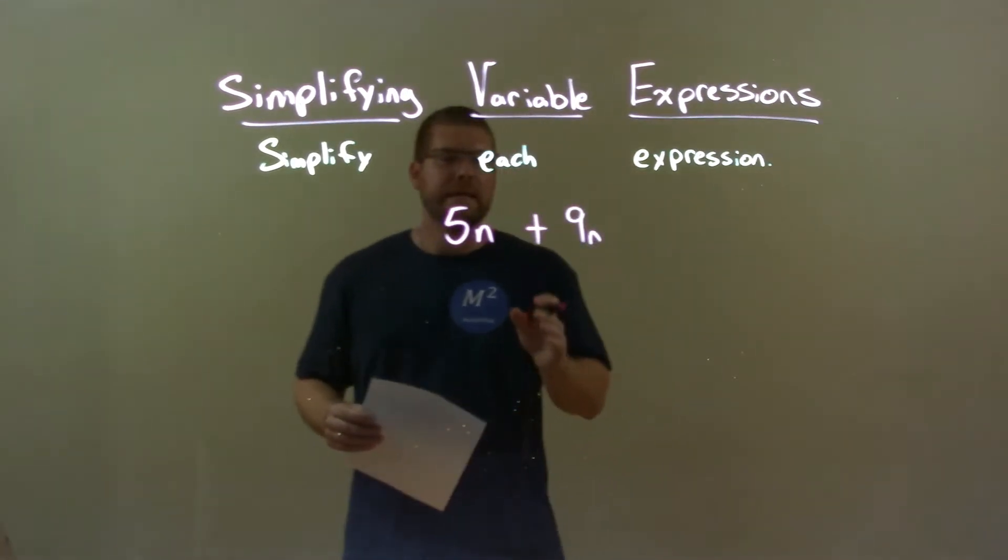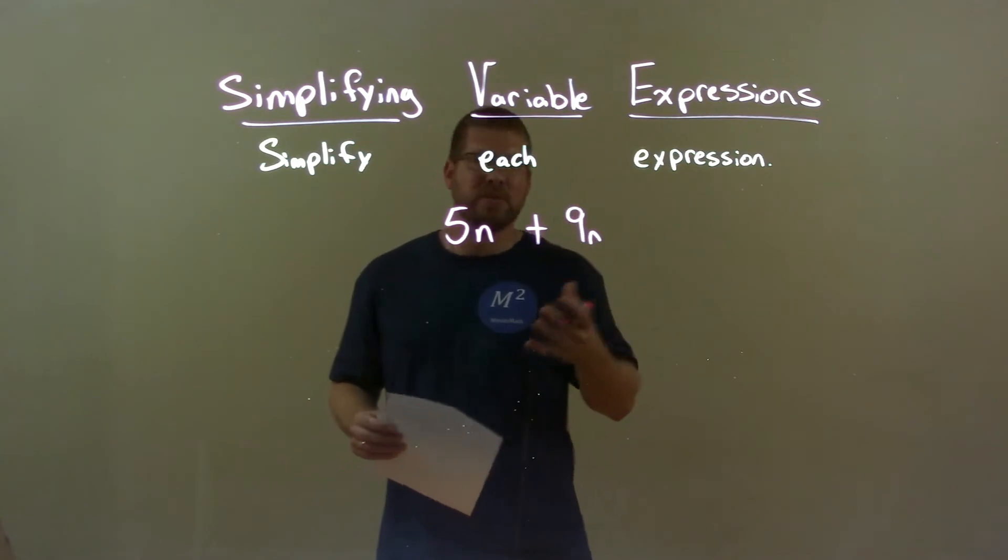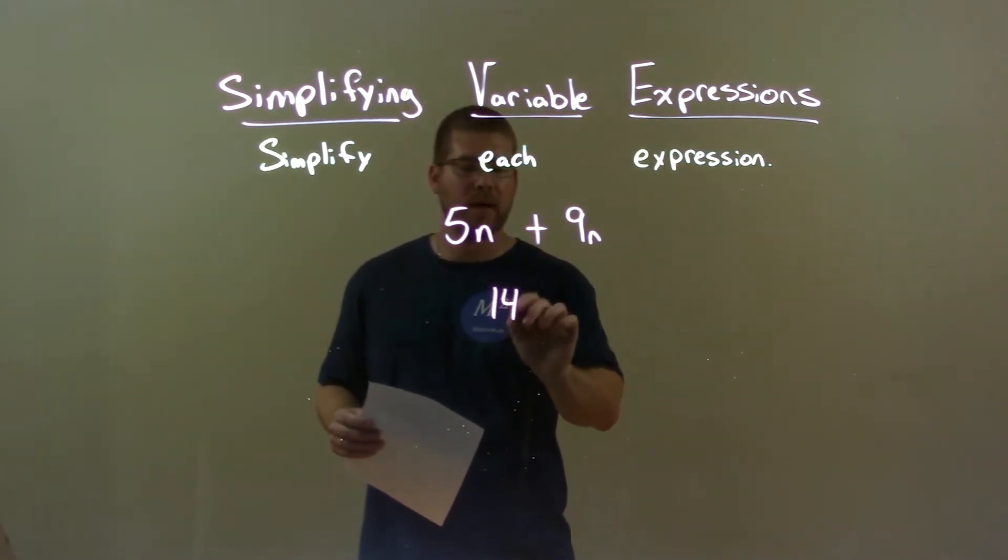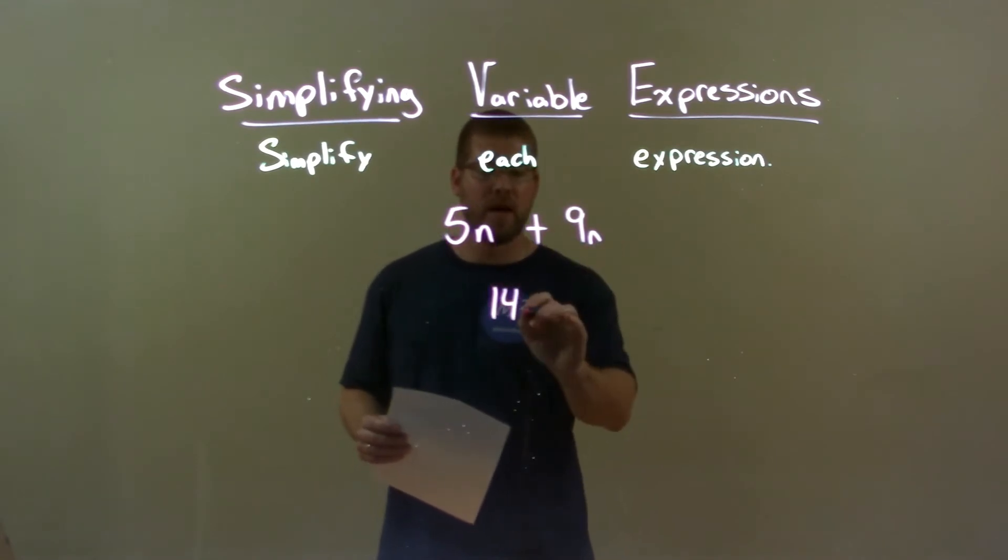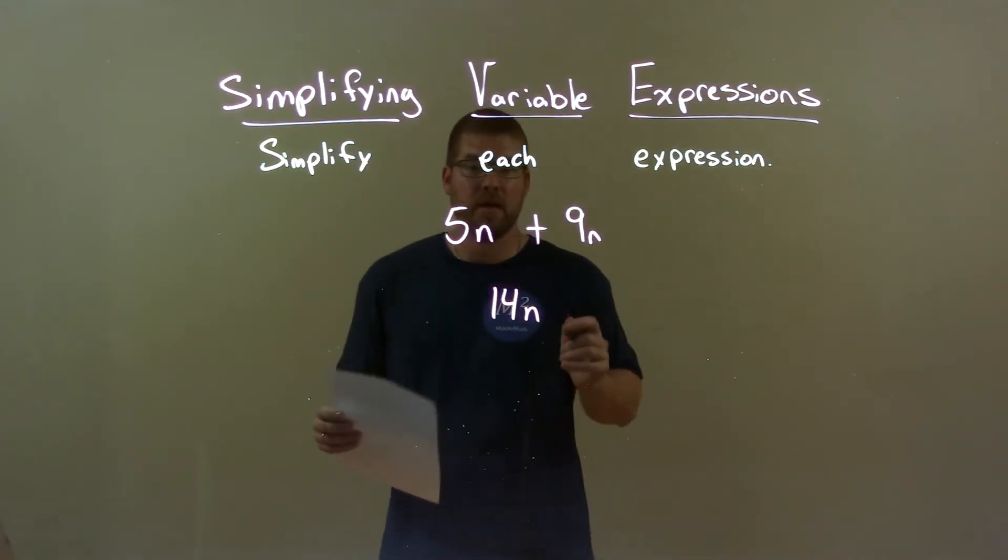Well, what I want to do is treat these as if they're just the numbers, but with the variables. 5 plus 9 is 14 and we can combine them because they both just have the variable n. Make sure we bring that down and then we're done.